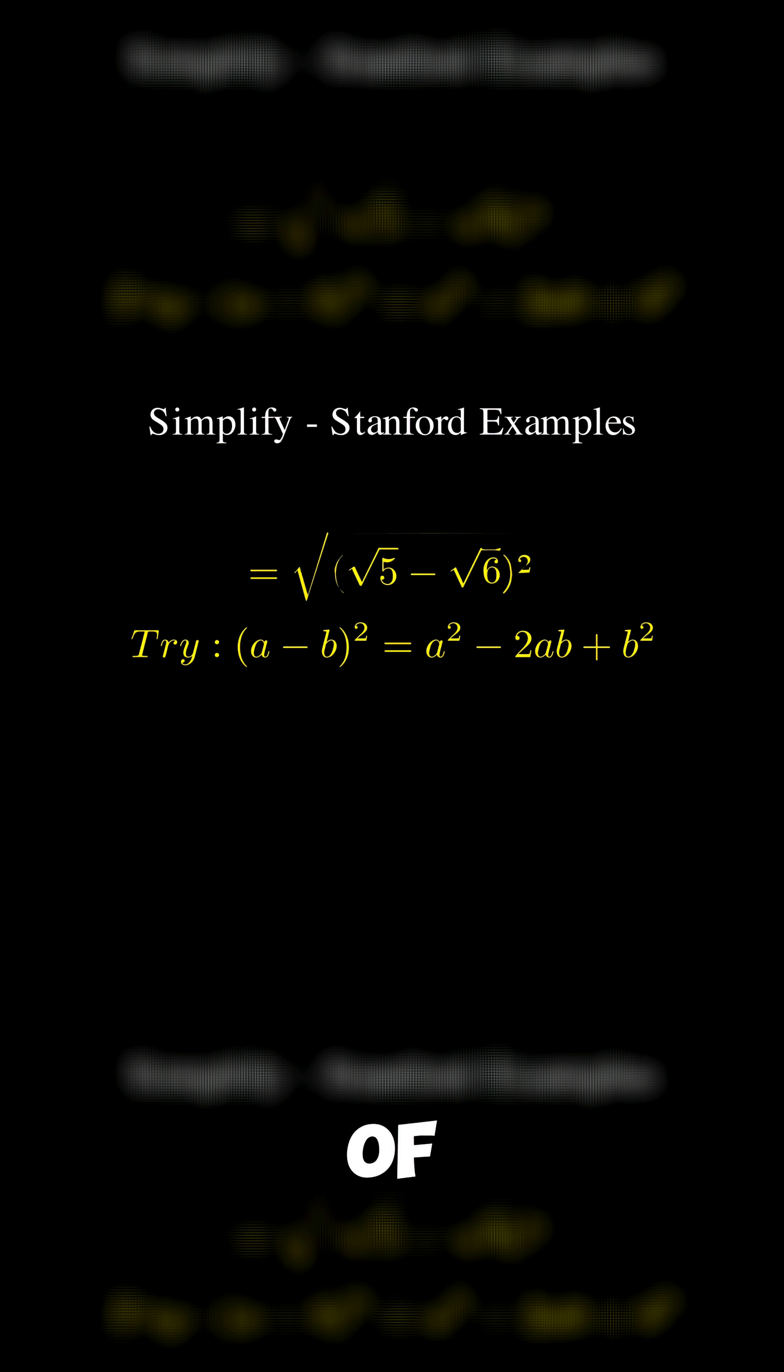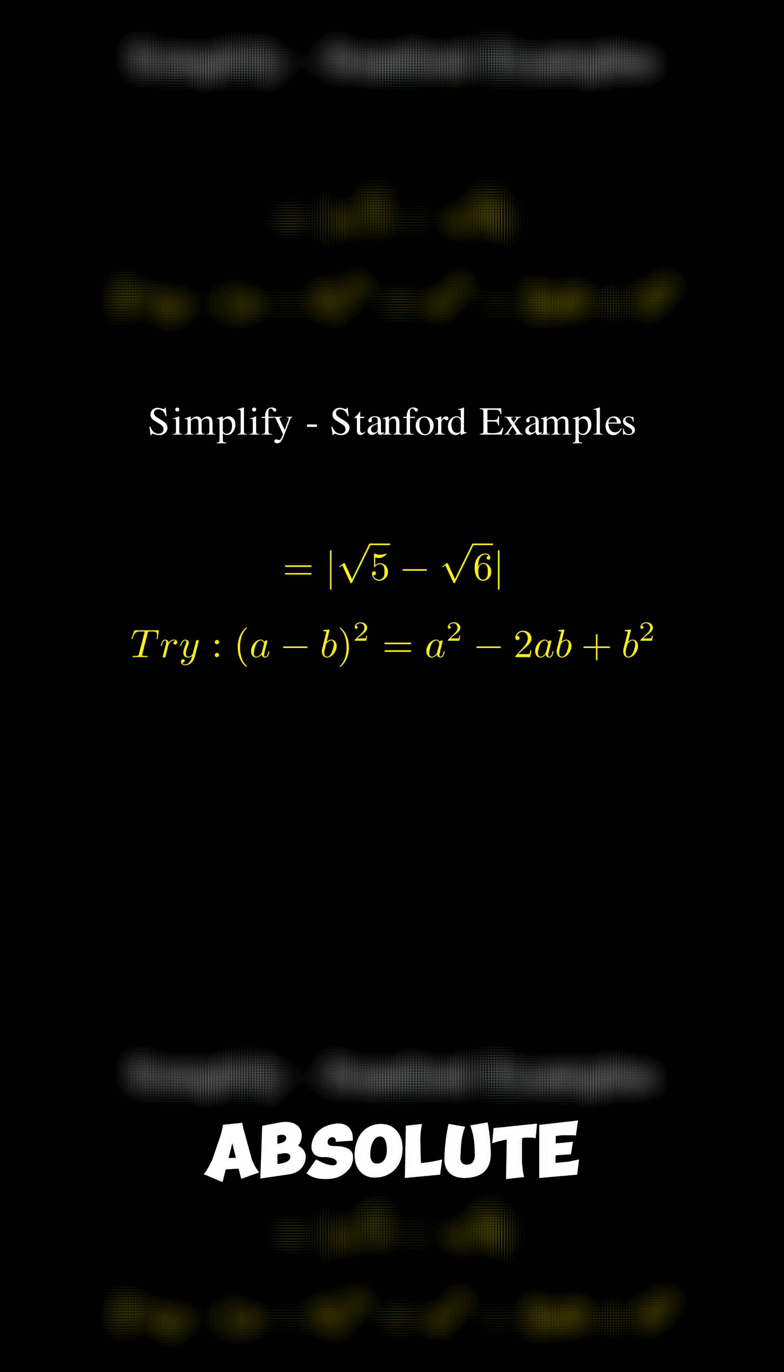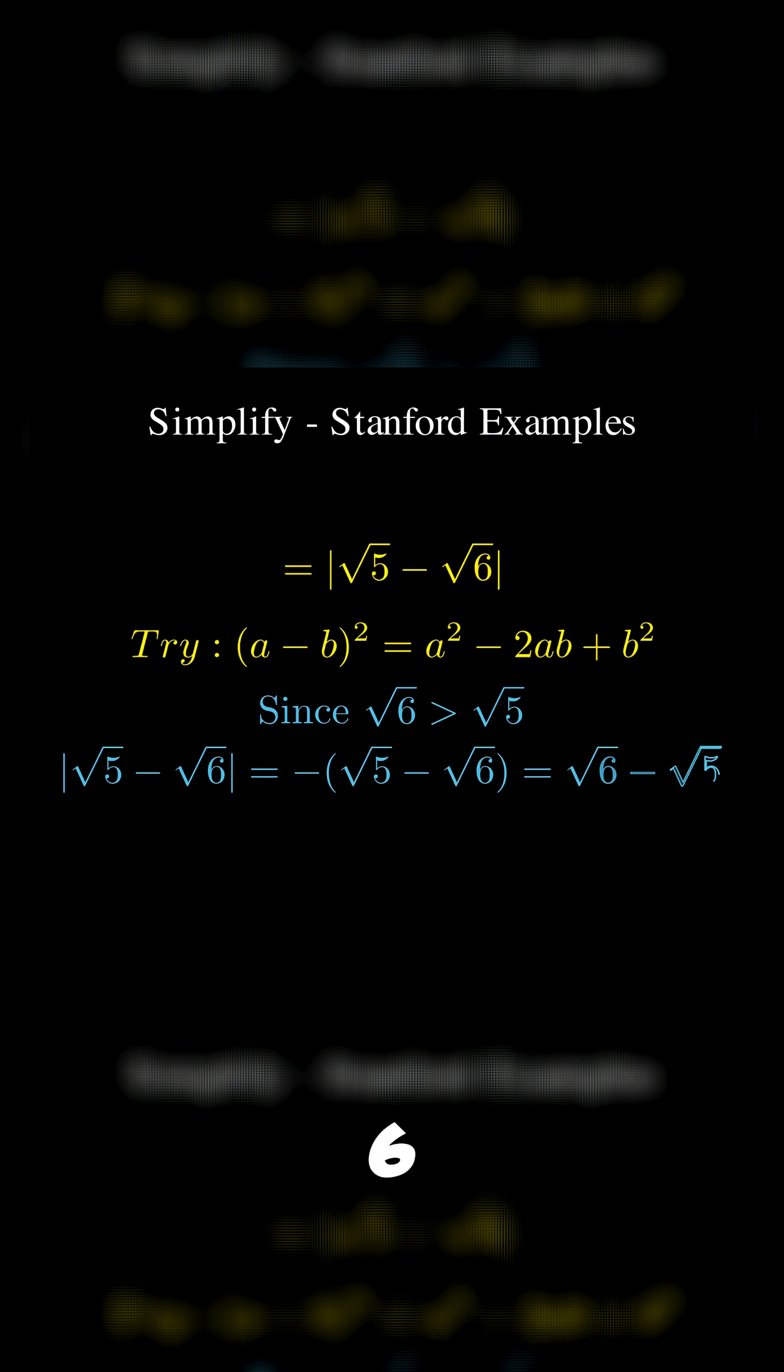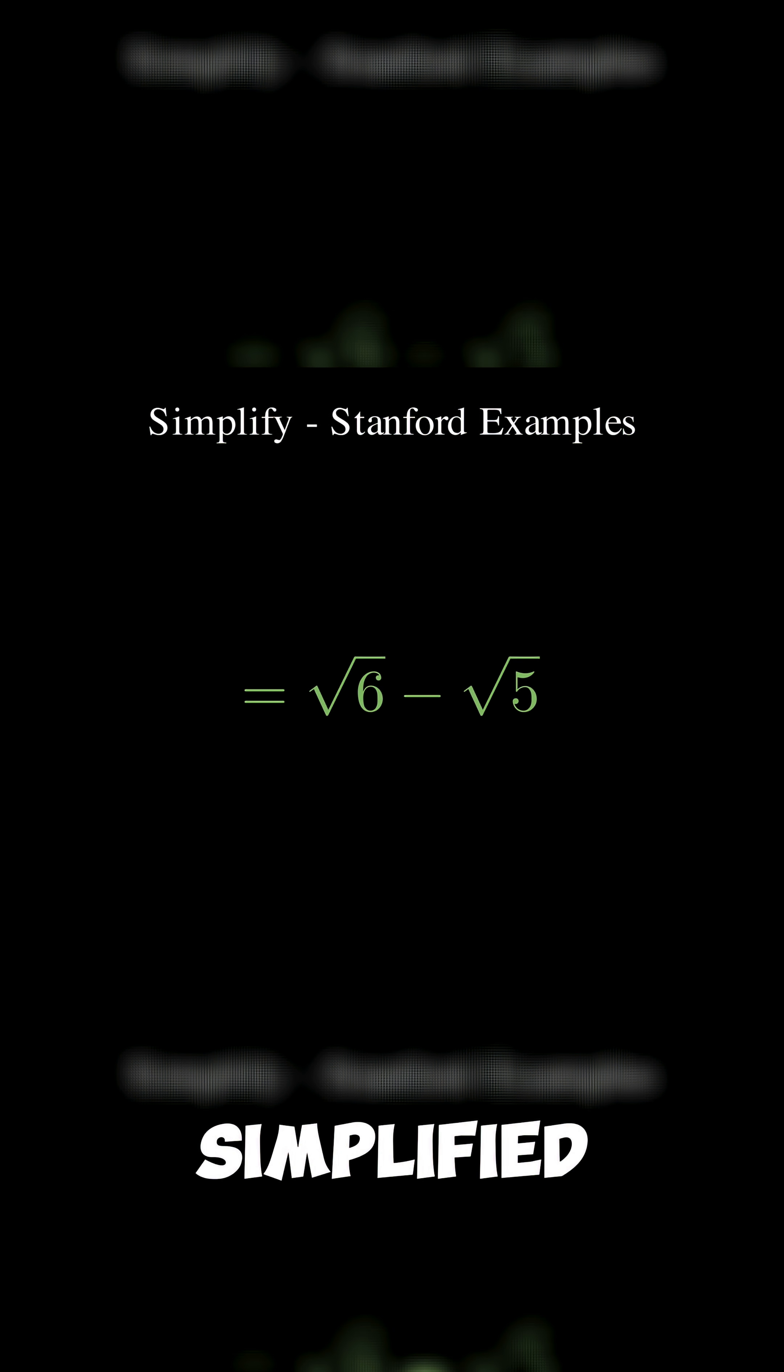When we take square root of perfect square, an absolute value appears. Since square root 6 is bigger than square root 5, the absolute value simplifies to square root 6 minus square root 5. And there we have it, the simplified result.